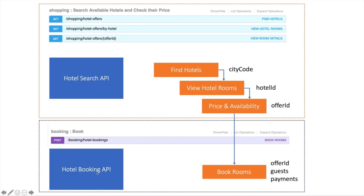Then you're ready to move to the booking API. Unlike the previous three APIs which were GET requests, this one is a POST. You're going to pass the hotel offer ID — the room you want to book — some personal information, the names of the travelers who are going to stay at the hotel, and the payment information. And that's all — you're ready to do the booking.